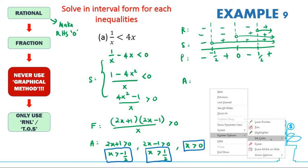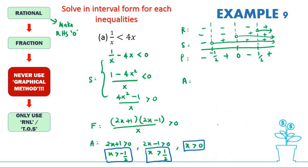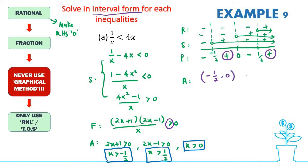Your answer depends on F. Since the expression must be greater than zero, take the positive regions. Your final answer in interval form is the union of (−1/2, 0) — both not included — together with (1/2, ∞) — also not included at 1/2.